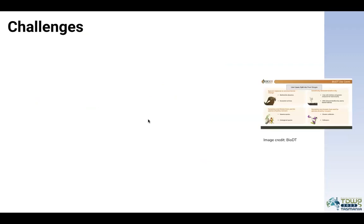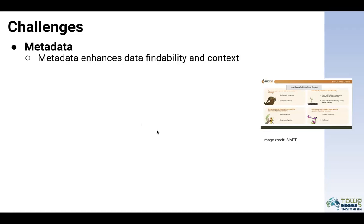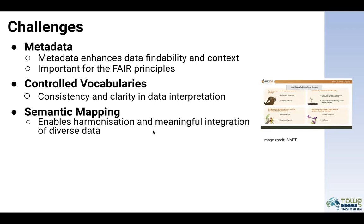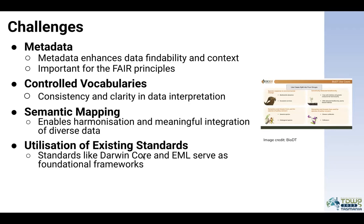Some of the challenges can be categorized the following ways, along with the path towards solution. Metadata are an important component as different types of data will be coming in; this is crucial for findability and context and important for FAIR principles. We'd like to use controlled vocabularies to be consistent in clarity and data interpretation. As different domains will be coming together, we want to enable harmonization and integration of diverse data through semantic mapping and, as much as possible, use existing standards to build the foundational frameworks.